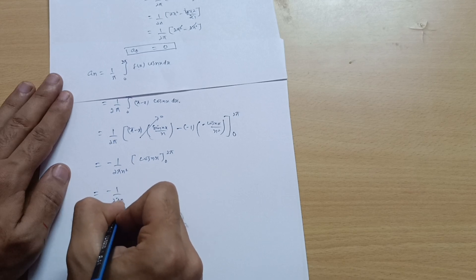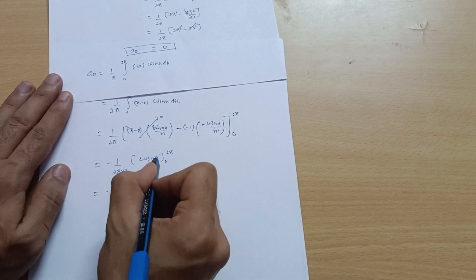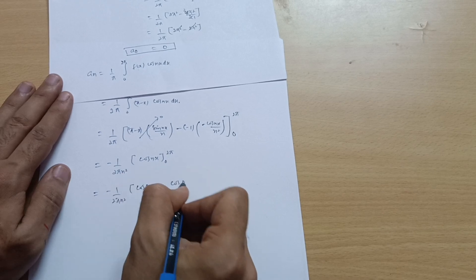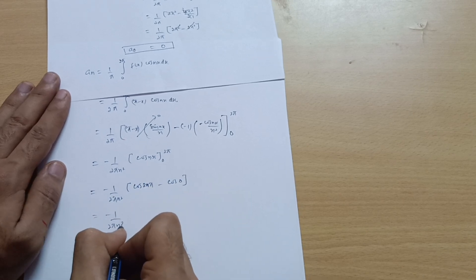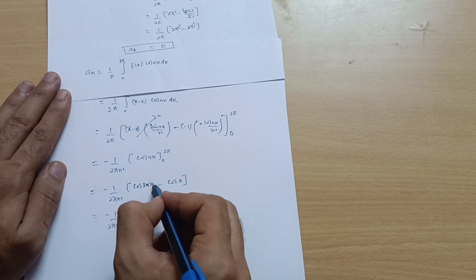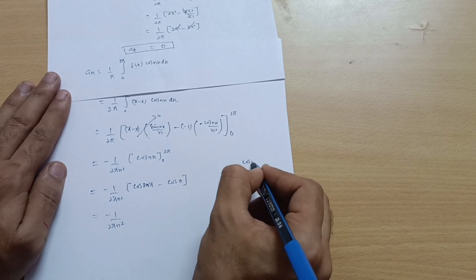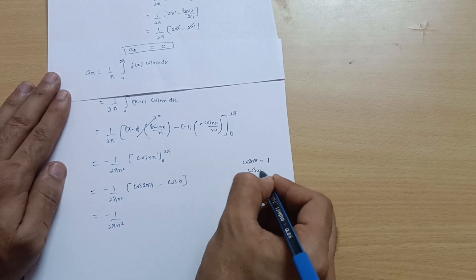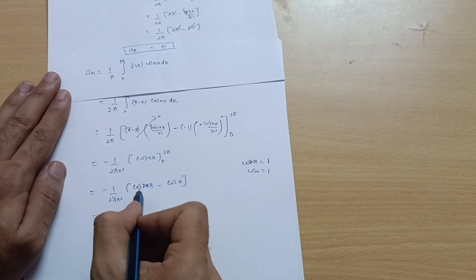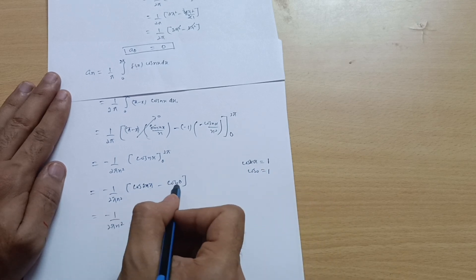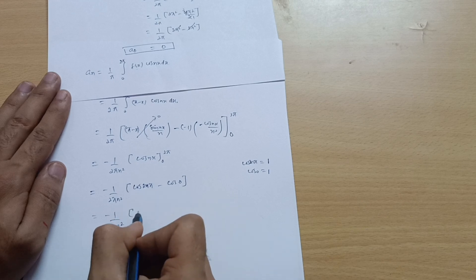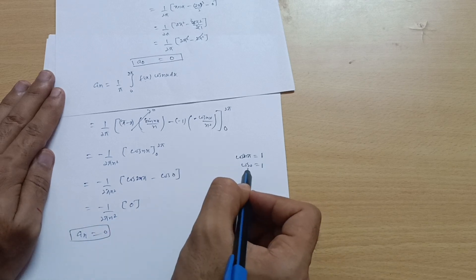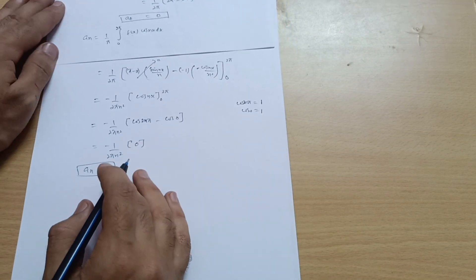Applying limits: −(1/2πn²)[cos(2nπ) − cos(0)]. Since cos(2nπ) = 1 and cos(0) = 1, we get 1 − 1 = 0. Therefore aₙ = 0. So both a₀ and aₙ are equal to 0.